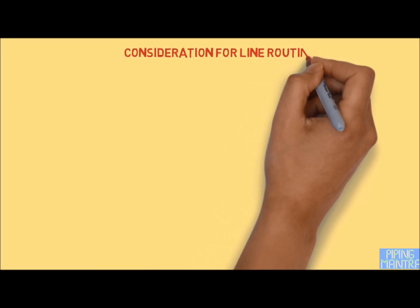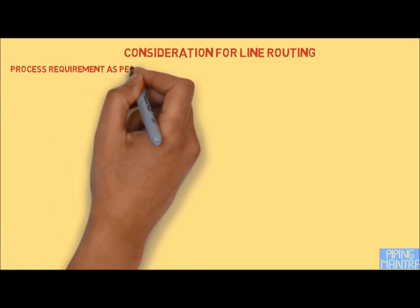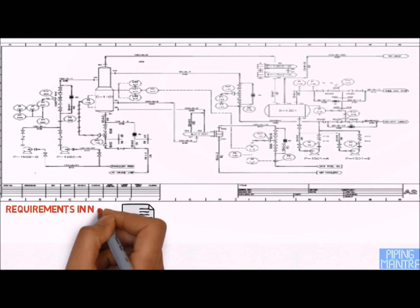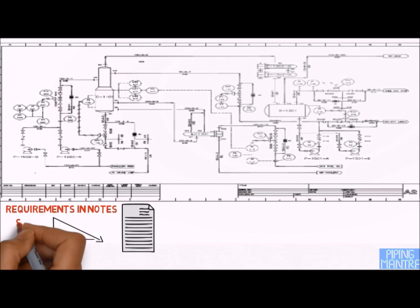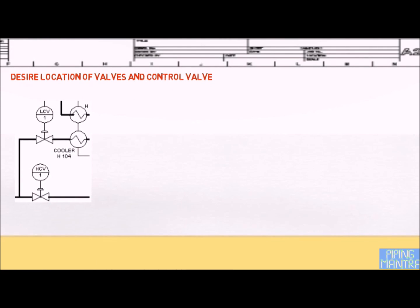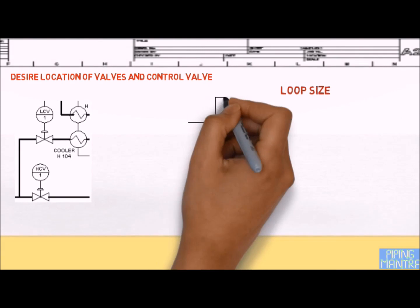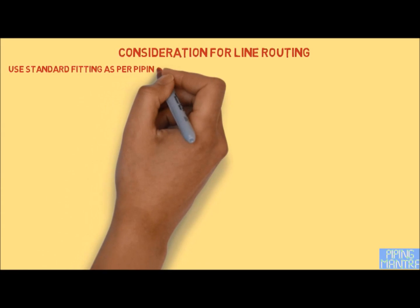Now we will cover the procedure for line routing. The basic requirement is that it should meet the process requirements mentioned in the P&ID. We also have to refer to written notes in the P&ID for specific requirements such as slope, loop size, length of barometric legs, restriction of piping length on horizontal or vertical legs, and desired location of valves and controls. We should use standard fittings as per the piping material specification.